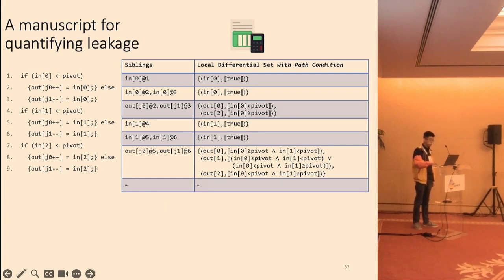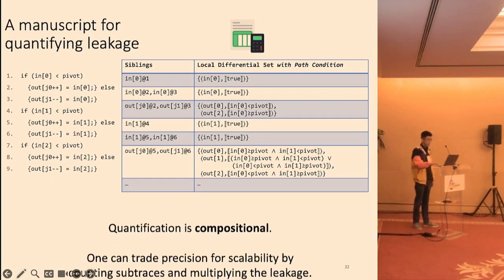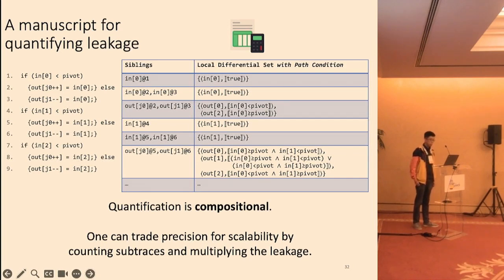Besides, we want to point out that the quantification task is compositional. Instead of counting the number of traces, we can instead count sub-traces and multiply the leakage. Users therefore have a choice between precision and scalability.